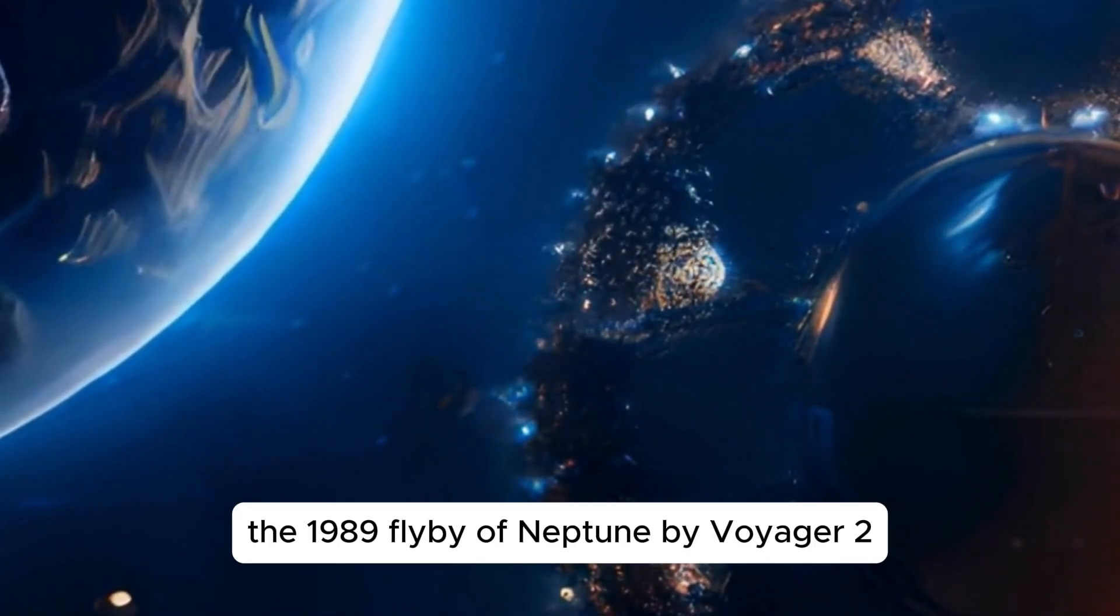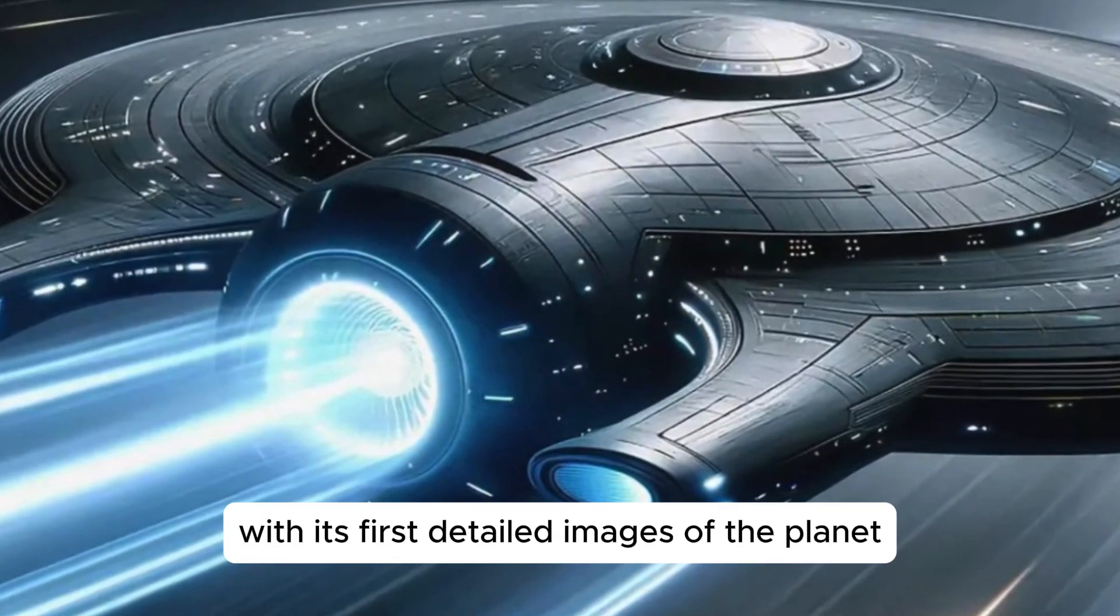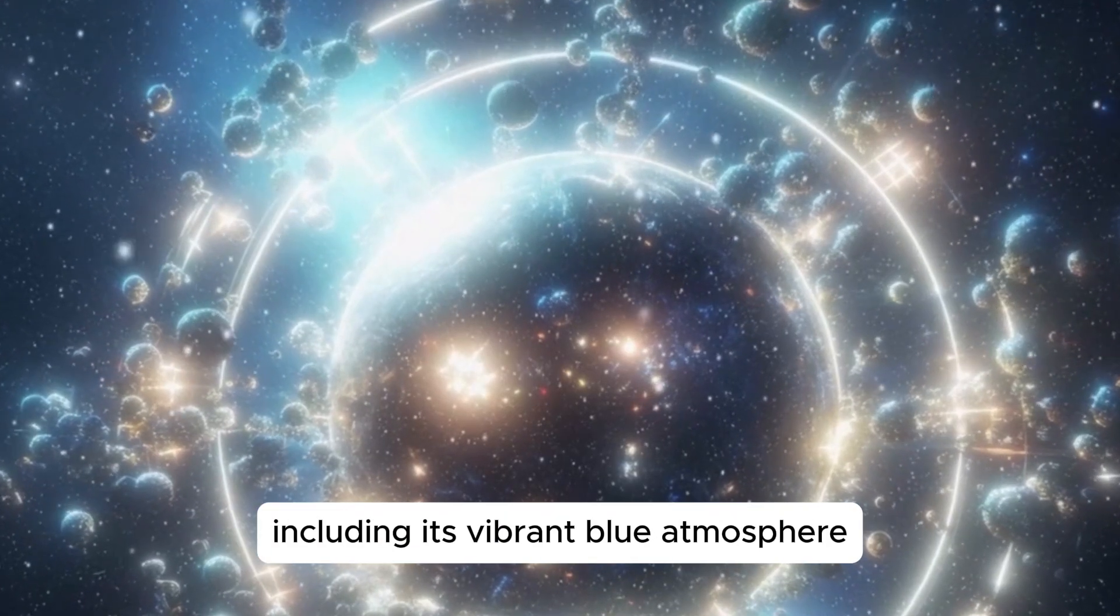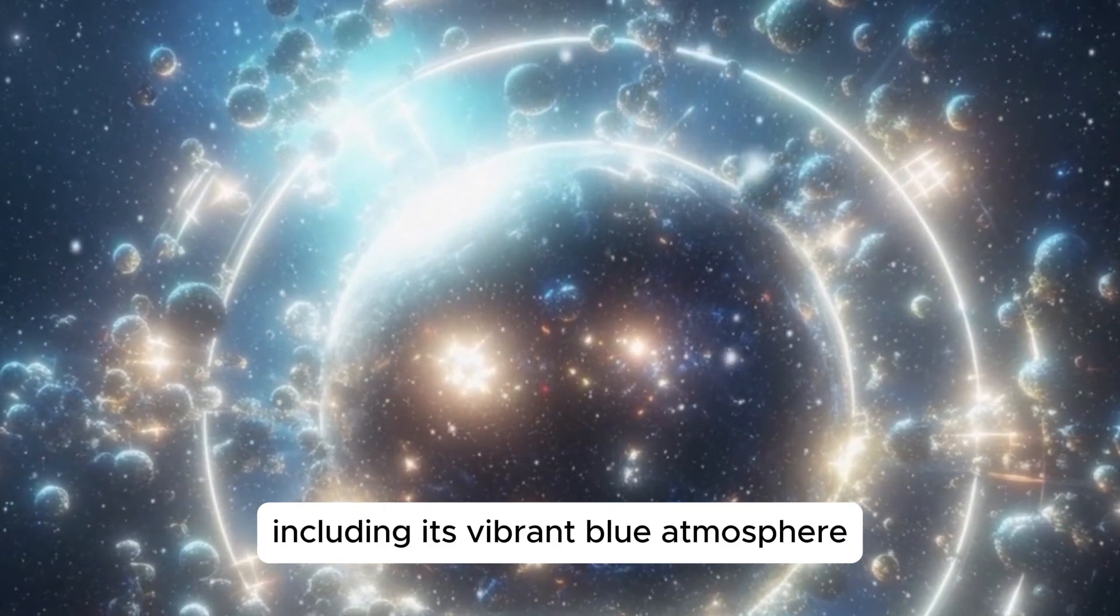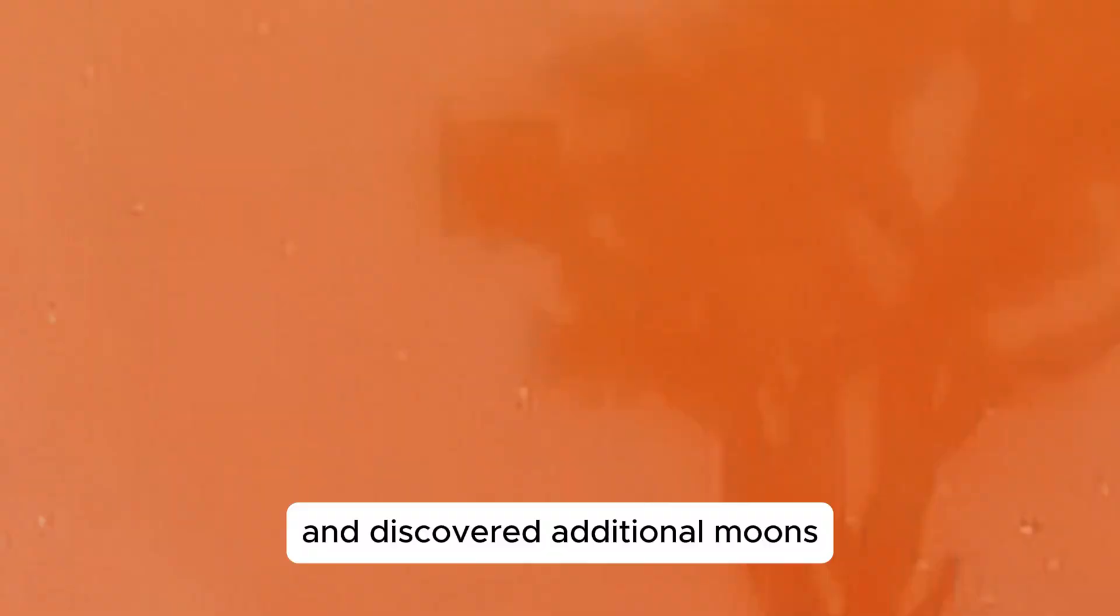The 1989 flyby of Neptune by Voyager 2 provided humanity with its first detailed images of the planet, including its vibrant blue atmosphere and the great dark spot. The spacecraft also confirmed the existence of Neptune's faint rings and discovered additional moons.